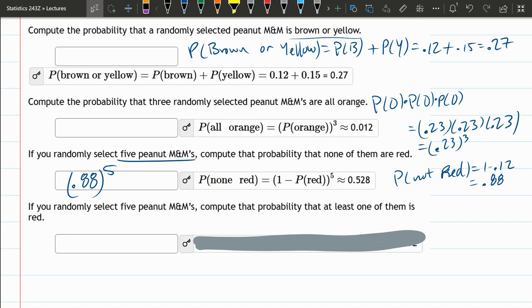Next up, we randomly select five peanut M&Ms. Compute the probability that at least one of them is red. Now, this would be really tricky to do if you didn't notice one important thing. So the probability that at least one of them is red. So there could be one red, two red, three red, four red, or all five red.